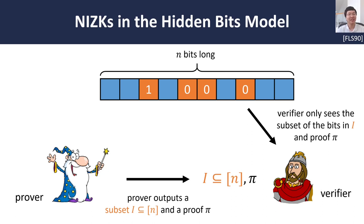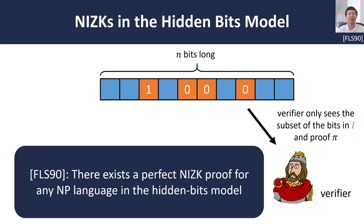The verifier sees this subset of bits, as well as the proof π, and now needs to decide whether to accept or reject. The work of Feige, Lapidot, and Shamir show that there exists an unconditional construction of a perfect NIZK proof for any general NP language in this particular model.